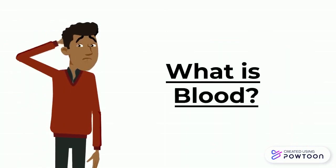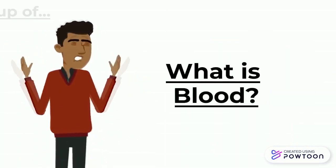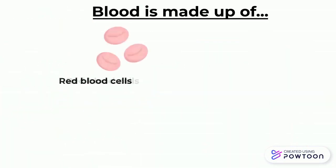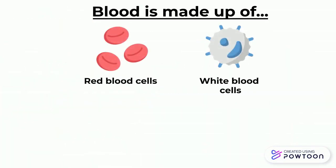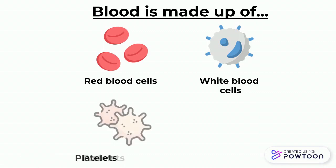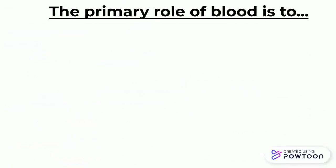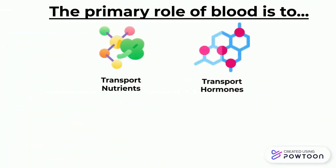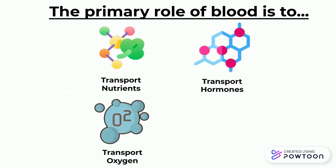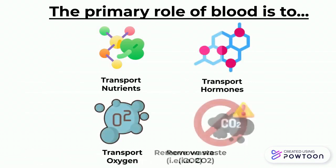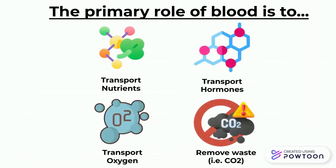To start, what is blood? Briefly, blood is made up of red blood cells, white blood cells, platelets, and plasma — the liquid portion of your blood. Flowing through your arteries and veins, the primary role of blood among many others is to transport nutrients, hormones, and oxygen throughout the body while removing waste products like carbon dioxide.